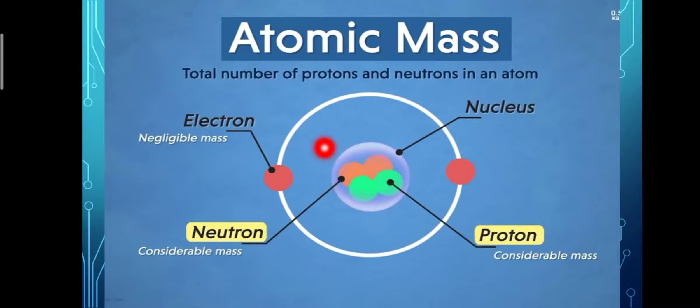It is the nucleus which contains protons and neutrons. The sum of the protons and neutrons is also called the number of nucleons or nucleon number.